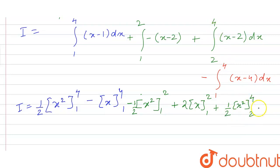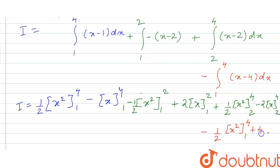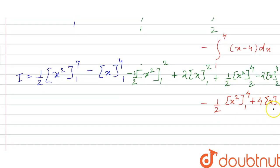Similarly, we have plus (1/2) x squared with limit from 2 to 4, and minus 2x with limit from 2 to 4. We are also left with minus (1/2) x squared with limit from 1 to 4, and plus 4 times x with limit from 1 to 4.